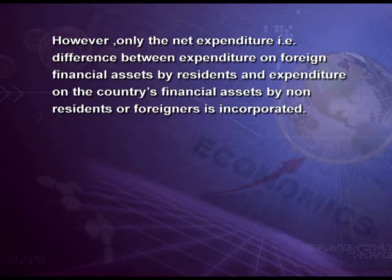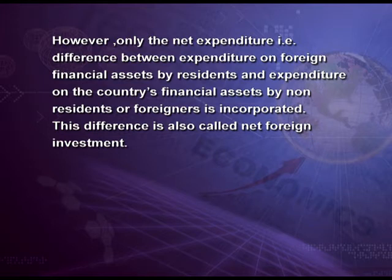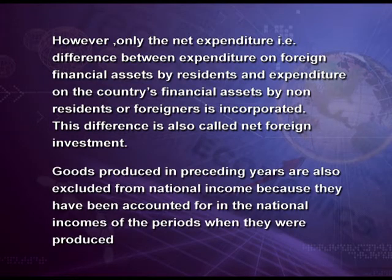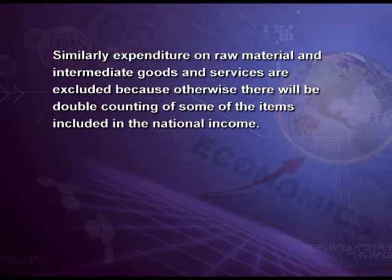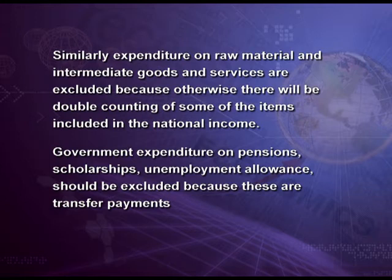Expenditure on financial assets produced and owned within the country is excluded, but expenditure on financial assets of foreign countries is included in national expenditure. However, only the net expenditure — that is, the difference between expenditure on foreign financial assets by residents and expenditure on the country's financial assets by non-residents — is incorporated. This difference is also called net foreign investment. Goods produced in a preceding year are excluded from national income because they have been accounted for in prior periods. Expenditure on raw materials and intermediate goods and services are excluded to avoid double counting. Government expenditure on pensions, scholarships, unemployment allowance, etc. should be excluded because these are transfer payments, not factor payments.